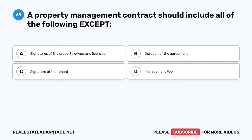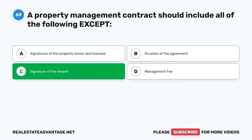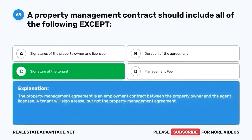Question 69. A property management contract should include all of the following except: A. Signatures of the property owner and licensee. B. Duration of the agreement. C. Signature of the tenant. D. Management fee. The correct answer is C. Signature of the tenant. The property management agreement is an employment contract between the property owner and the agent licensee. A tenant will sign a lease, but not the property management agreement.